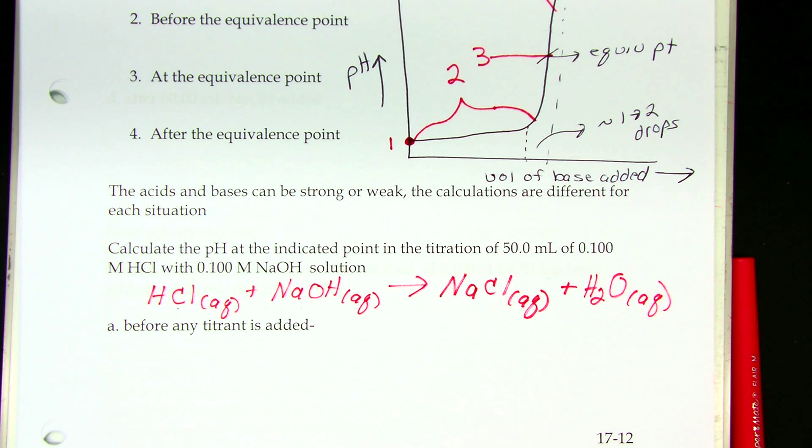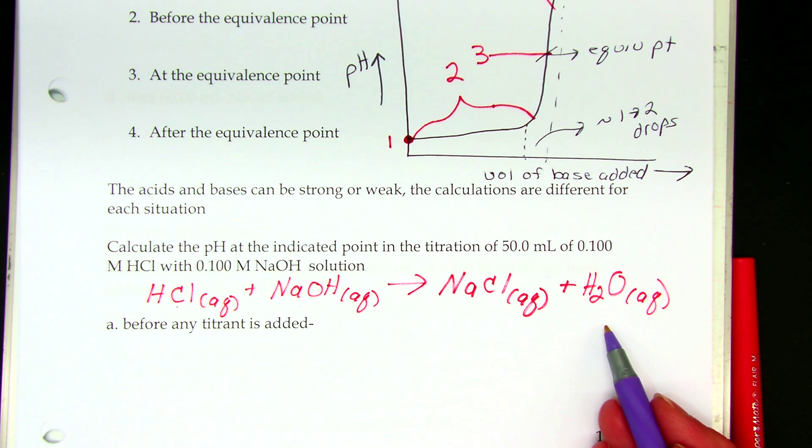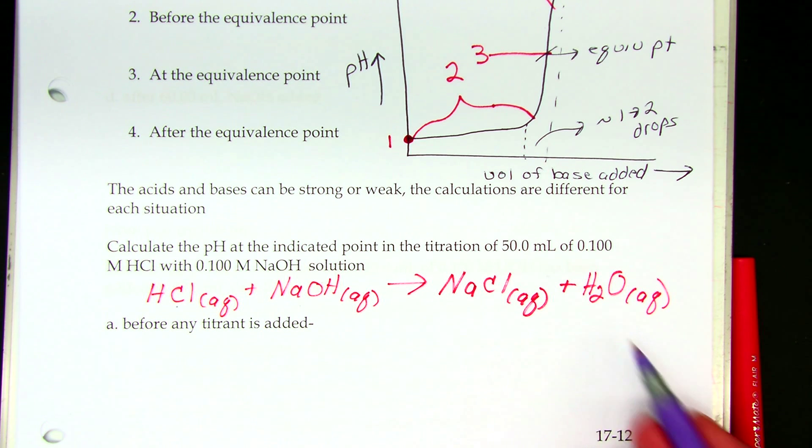Sodium ions. What effect do sodium ions have on pH? None. What effect do chloride ions have on pH? None. What effect does water have on pH? Seven, right? It's neutral. The pH is seven. Water is a neutral pH. So what would the pH be at the equivalence point when I'm done titrating? Seven.